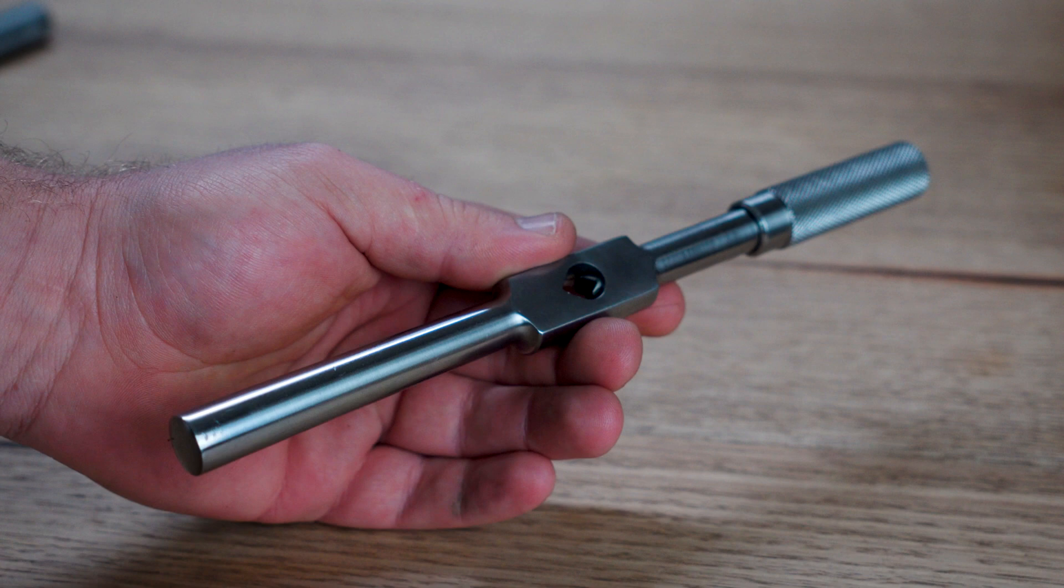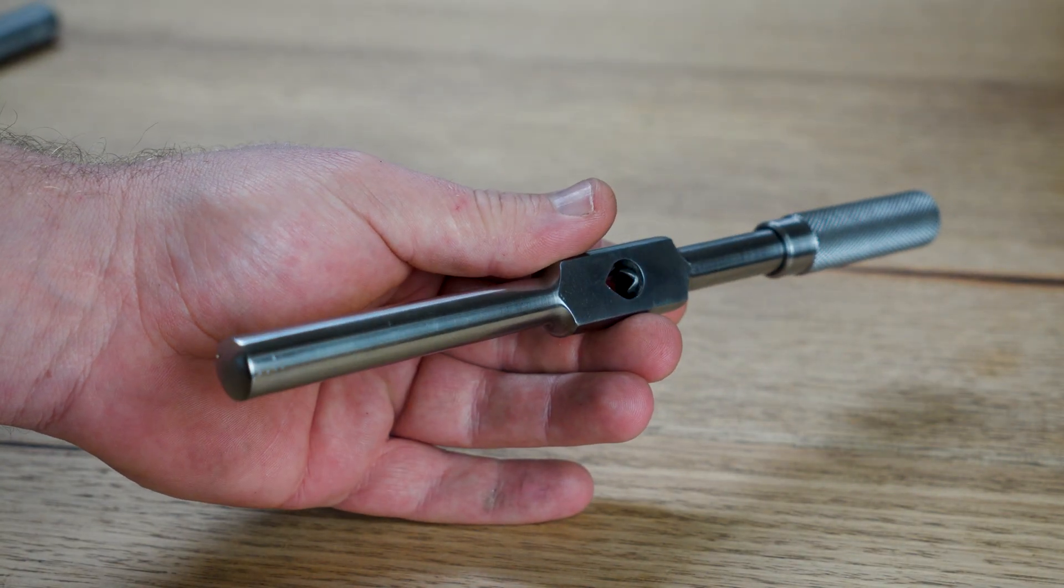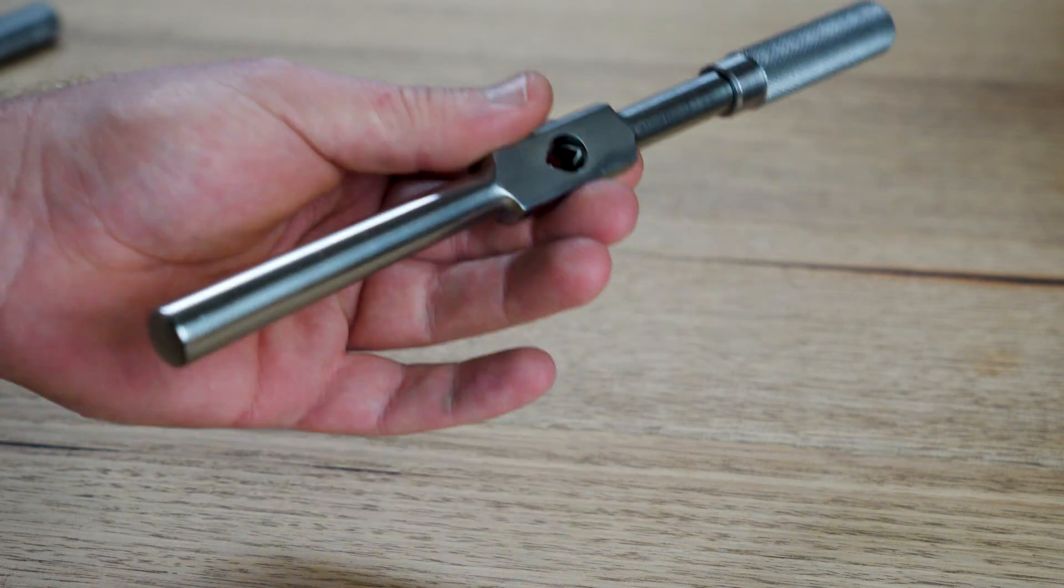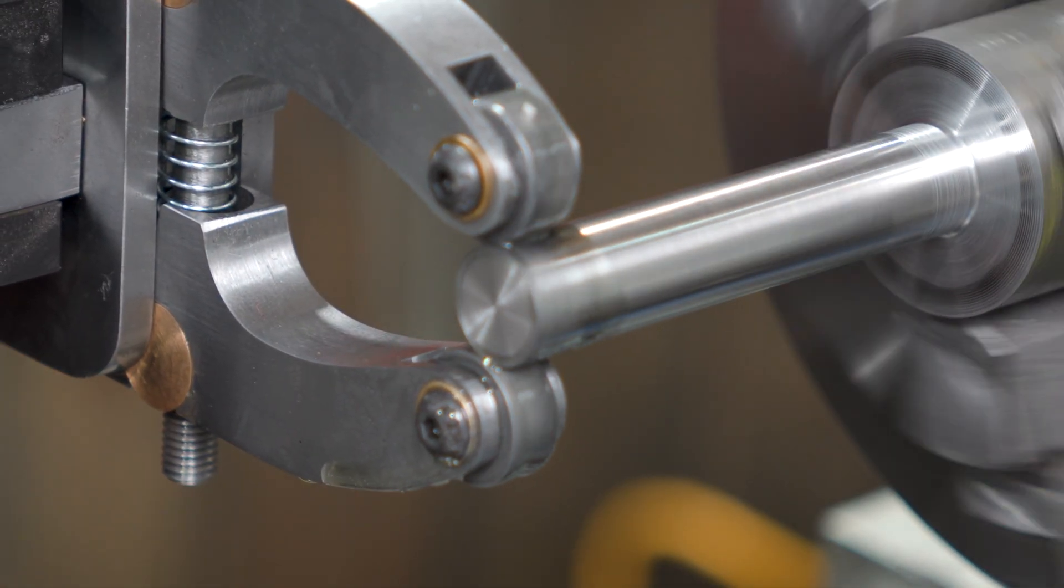Now for this project, I'll be following a lot of similar processes to the tap handle, so if there's anything I've missed, be sure to check that one out. I'll link it above and in the description below, but basically, we'll kick this one off with the threaded clamping action part.